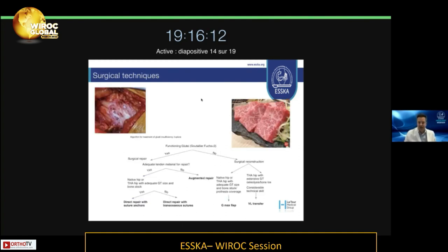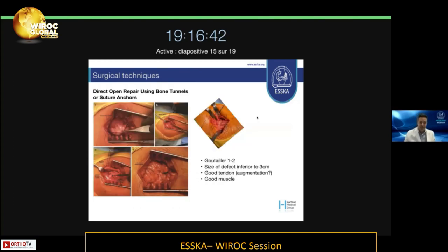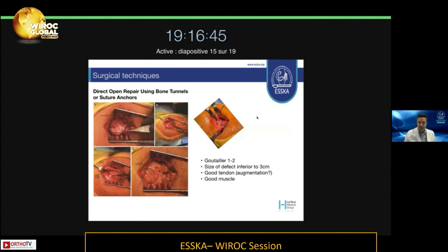Surgical techniques will vary based on whether the gluteal muscles are functional or not, and also on the degree of tendinous damage — whether it is a clear tear or a degenerative tear, and whether the muscle is still viable or highly degenerative and infiltrated with fat. According to the stage of damage, you will see this decisional plan with different options to treat. Direct open repair using bone tunnels and suture anchors is the best treatment you can offer to your patient, but is only feasible with low degenerative stages — Goutallier 1 or 2, with a defect less than 3 centimeters and good tendon quality, potentially augmented, and good muscle.